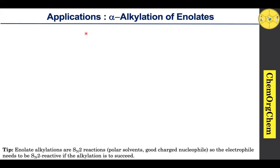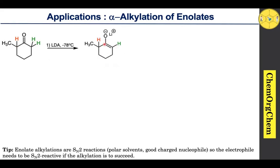Moving on to applications of LDA — the first one is alpha alkylation of enolate. When LDA is used, it takes the proton from the less hindered site to produce the corresponding enolate ion. This enolate then reacts with methyl bromide by an SN2 mechanism to yield the corresponding alkylated ketone as a product.